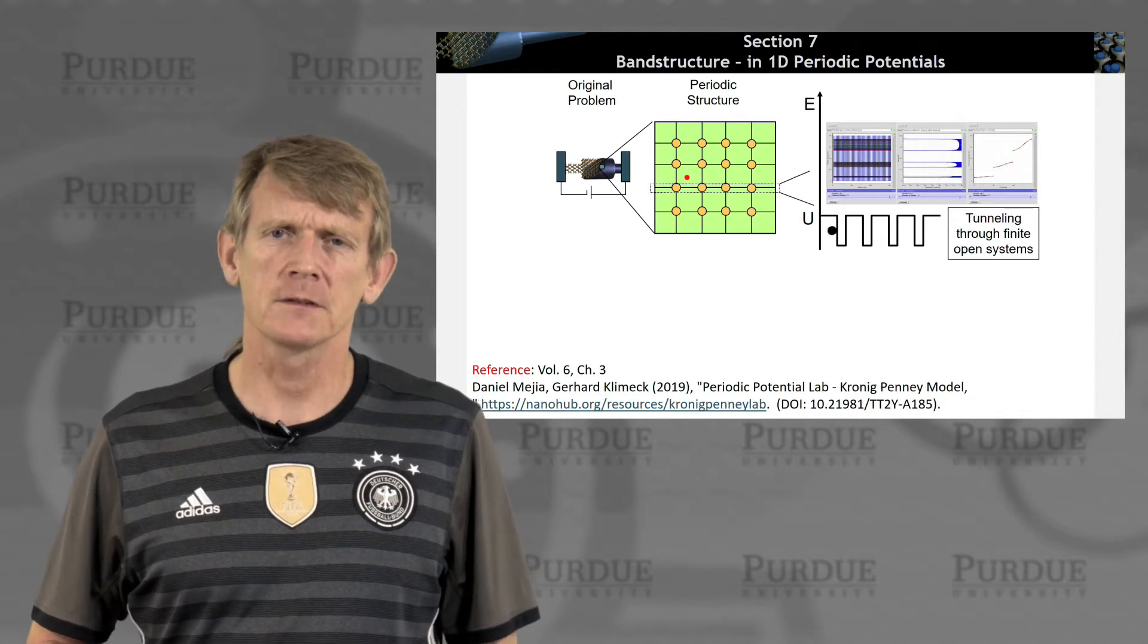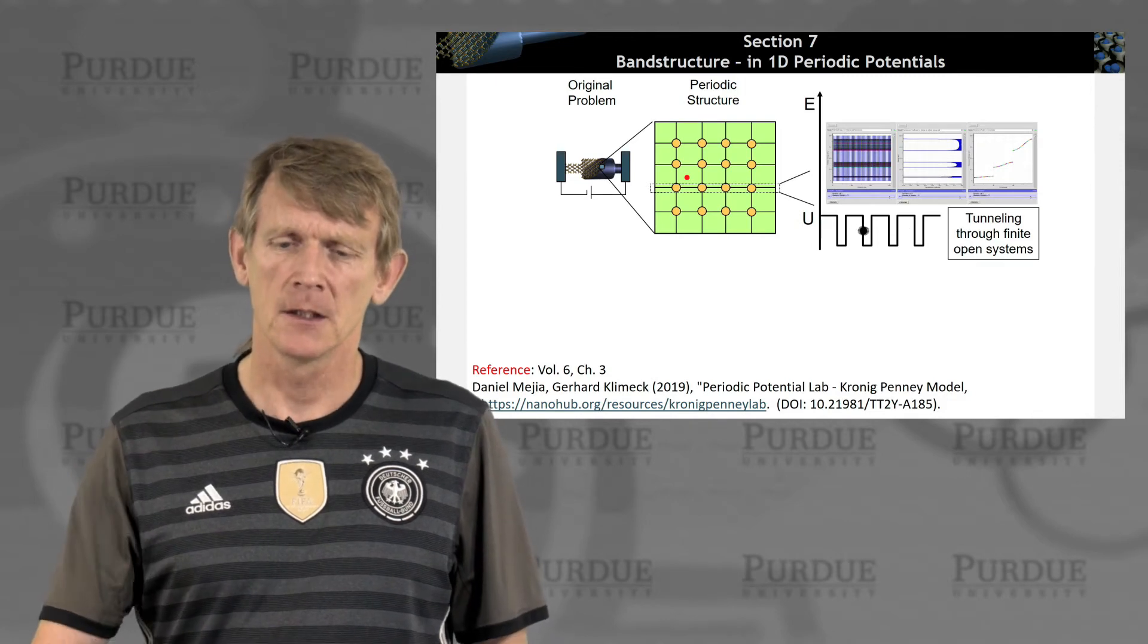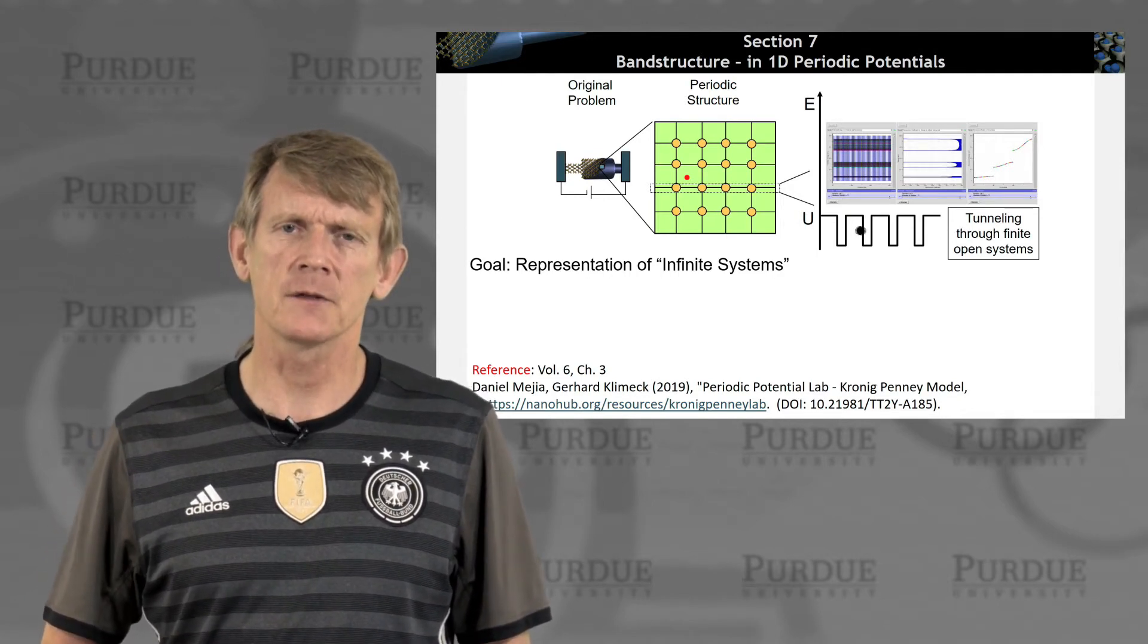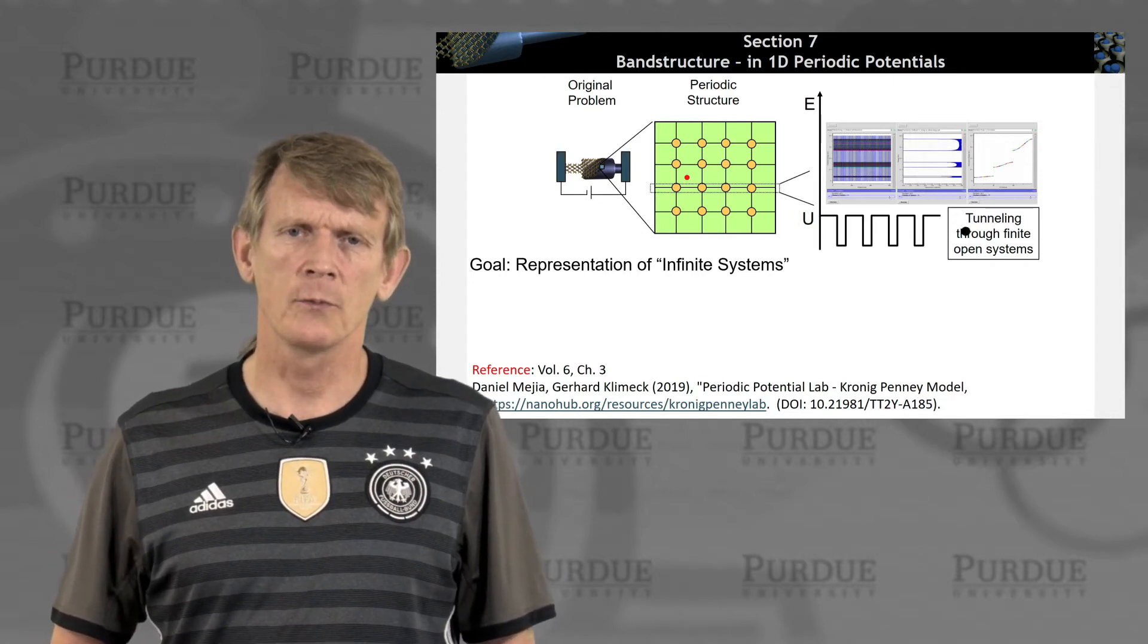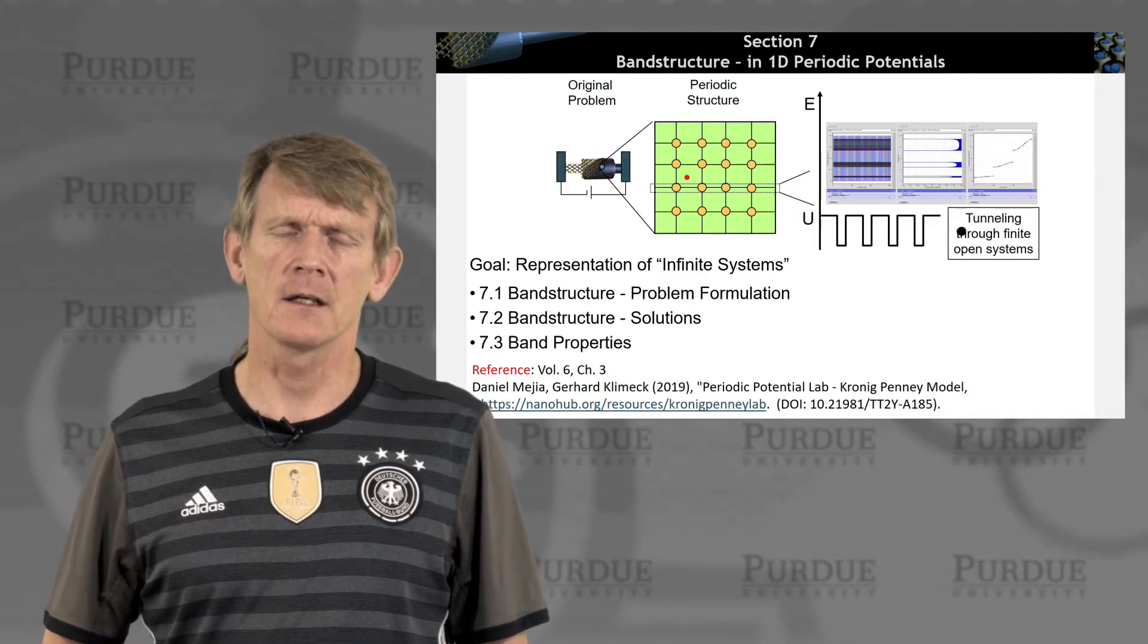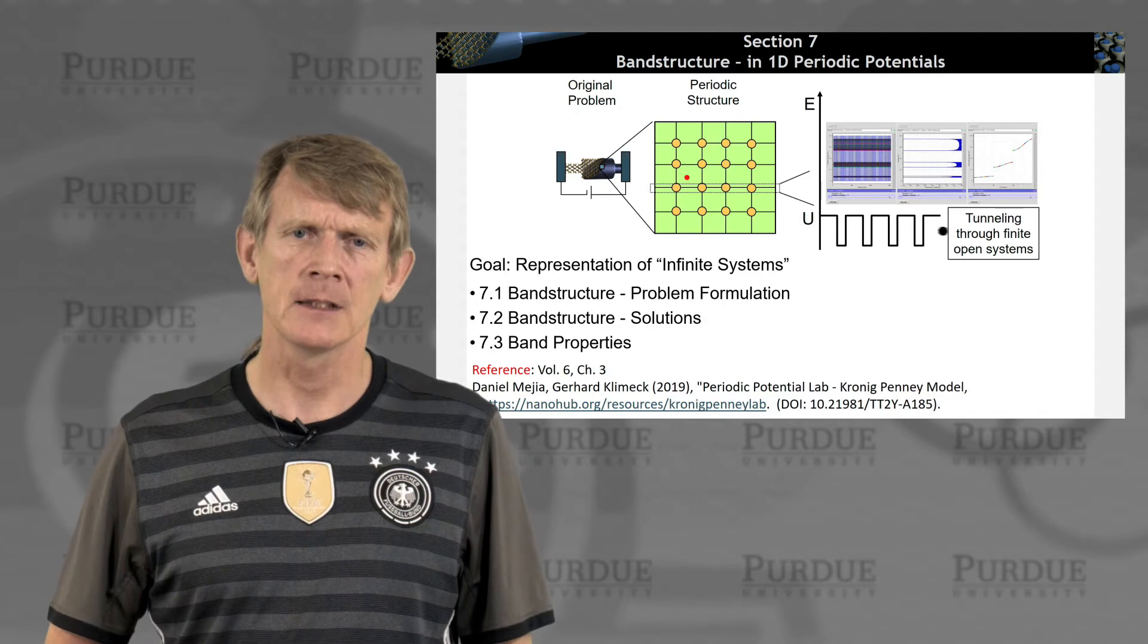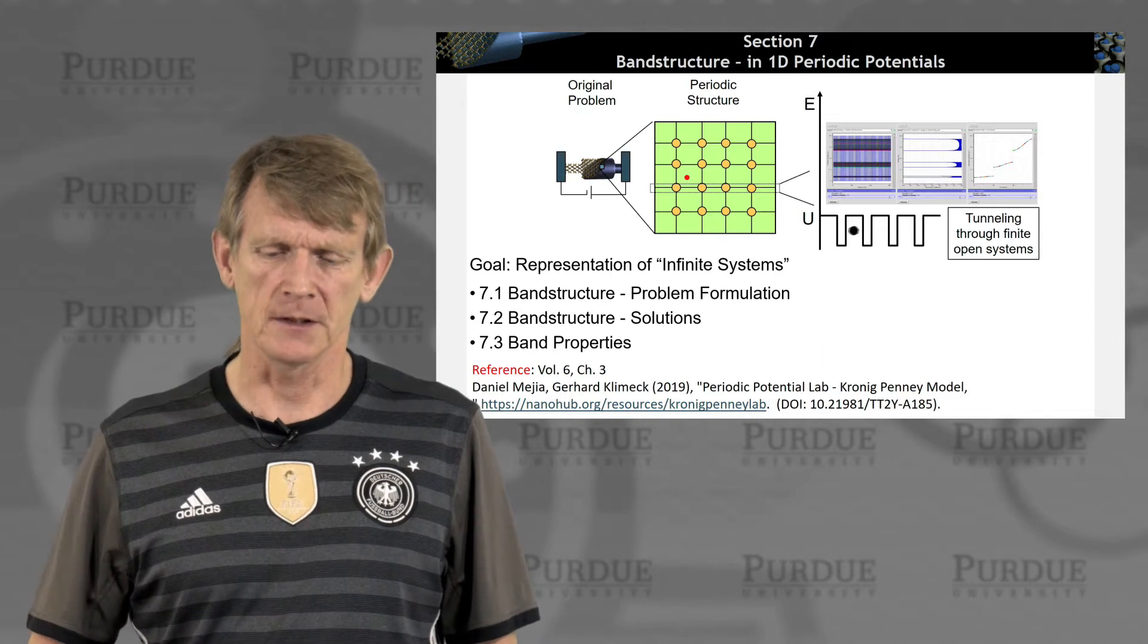Tunneling was treated explicitly in an open system approach with a transform matrix. In this section, we'll aim for quasi-infinite systems. Of course, you can't truly make it infinite, but there's a trick, an analytical trick you can do to make it look infinite. What you'll see is that the solutions that are emerging are similar to what you've seen in a finite barrier structure. So we'll talk about the problem formulation, we'll discuss some solutions, and then discuss the band properties in more detail.